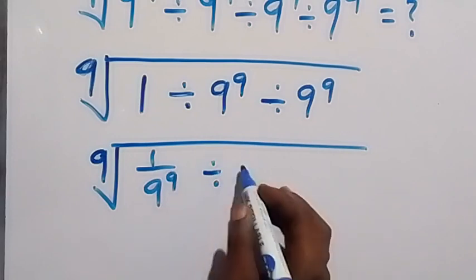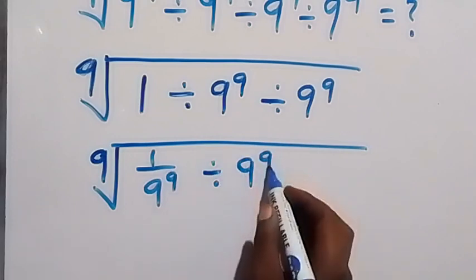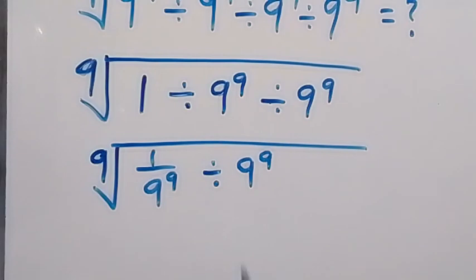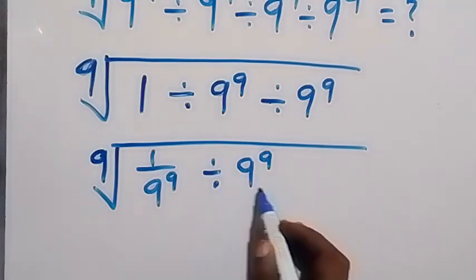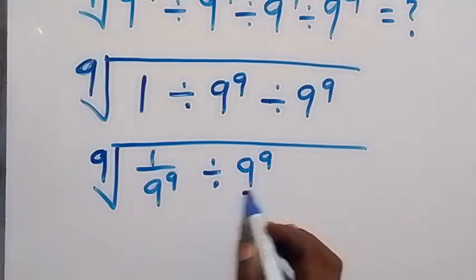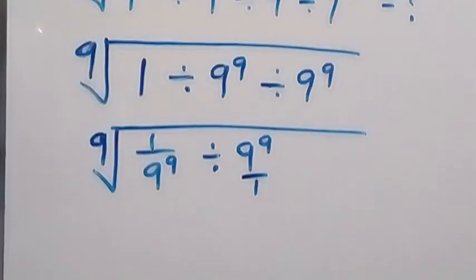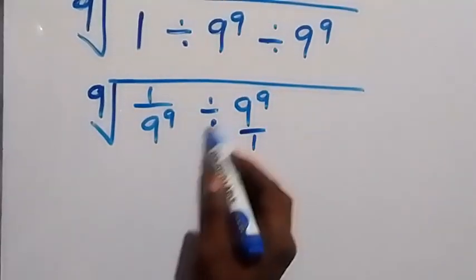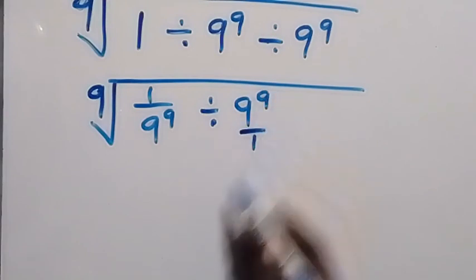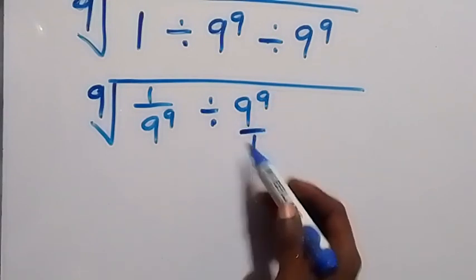This one is like over 1 here, so we can change this division to multiplication, and this fraction changes. While we go up 9^9, then we count down.